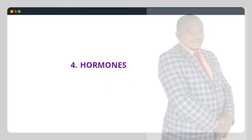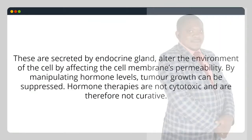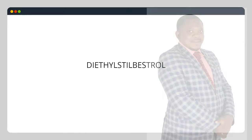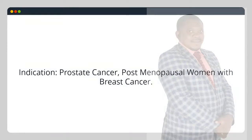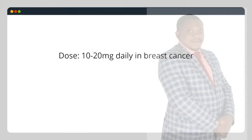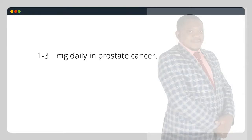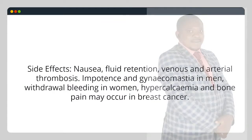4. Hormones: cell cycle phase non-specific. These are secreted by endocrine glands and alter the environment of the cell by affecting the cell membrane's permeability. By manipulating hormone levels, tumor growth can be suppressed. Hormone therapies are not cytotoxic and are therefore not curative. Diethylstilbestrol — indication: prostate cancer, postmenopausal women with breast cancer. Dose: 10–20 mg daily in breast cancer; 1–3 mg daily in prostate cancer. Side effects: nausea, fluid retention, venous and arterial thrombosis, impotence and gynecomastia in men, withdrawal bleeding in women, hypercalcemia and bone pain may occur in breast cancer.